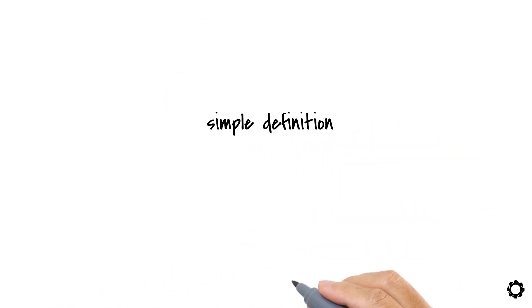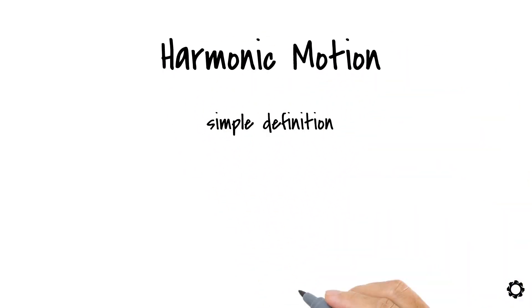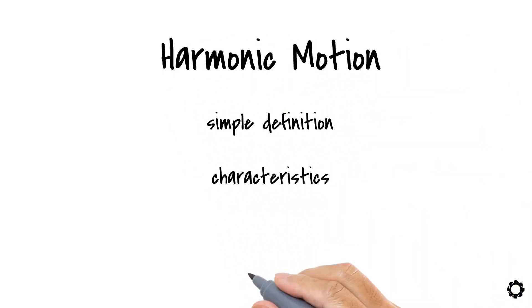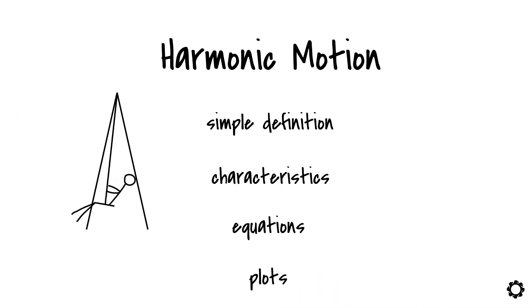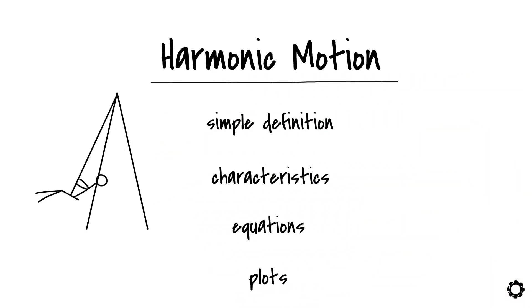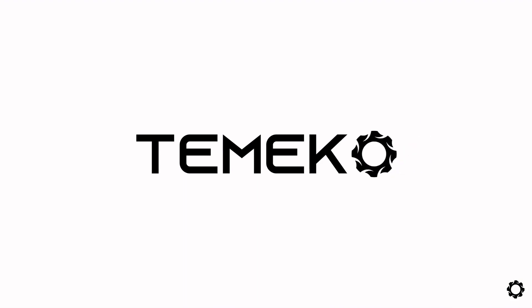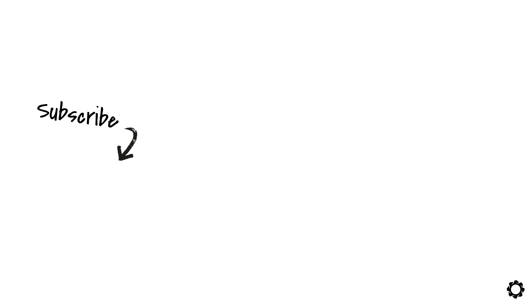Starting from a simple definition, we learned a lot of things about harmonic motion in this video — its characteristics, its equations, and plots. We understood them well enough to identify harmonic motion when we see it. Make sure to continue learning in our next video. We'll see you there.